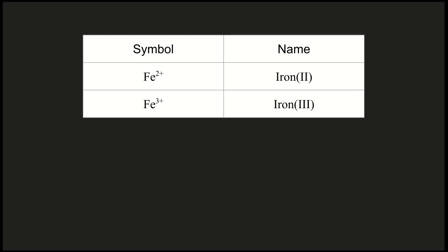With iron 2, we're writing again the charge as Roman numerals, so 2, inside of parentheses. So this is iron 2, and this is iron 3, with the 3 being that plus 3 charge.